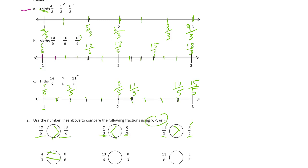Thirteen-sixths and eight-thirds. Thirteen-sixths, we already marked that one — it's right here, that's two. And eight-thirds is way over here, we marked that one already too. So eight-thirds is a lot bigger — eight-thirds is larger than thirteen-sixths. And eleven-sixths and five-thirds: eleven-sixths is going to be right here, in between ten and twelve. And five-thirds is over here, so eleven-sixths is greater.